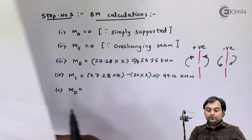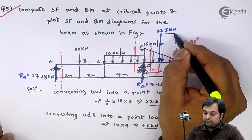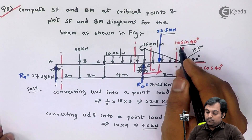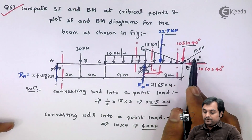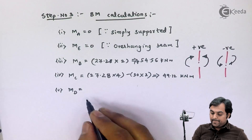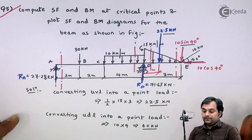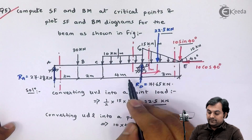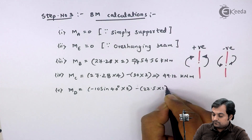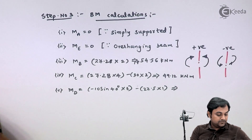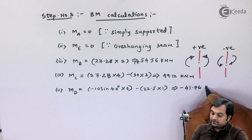Next I will calculate moment at D. I will consider the point load, UDL, and ten sine forty — both are producing clockwise moment to the right, and clockwise moments to the right are negative. So here I have minus ten sine forty into three, and the UDL of twenty-two point five is downward so negative, minus twenty-two point five into one. So moment at D comes out to be minus forty-one point seven-six kilonewton meter.